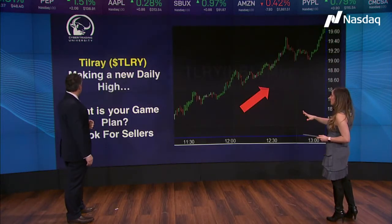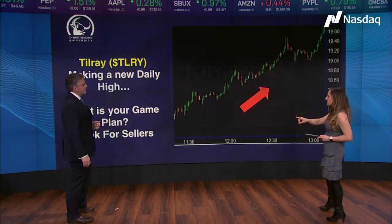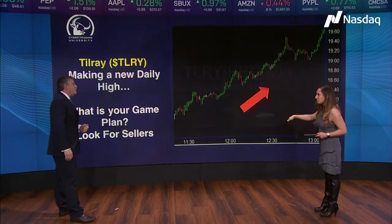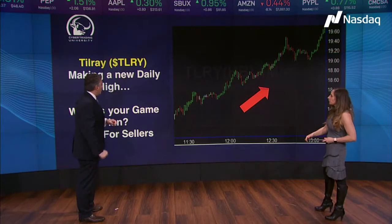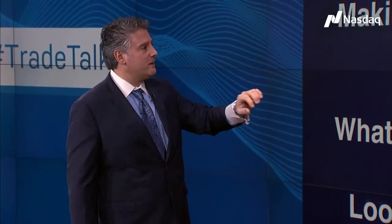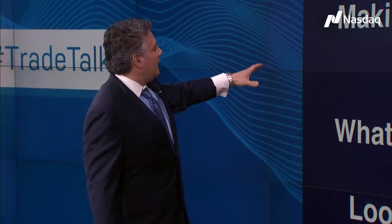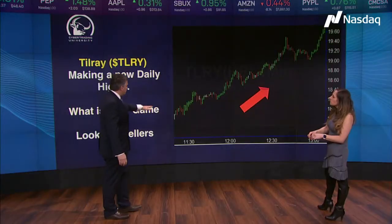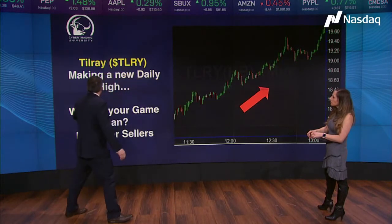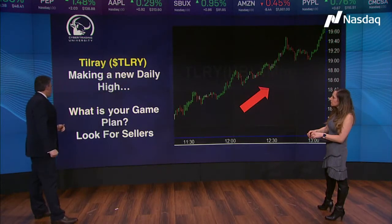Now let's move along to our next chart. It's Tilray. Different sector, but the same premise applies: when do you look to sell after you've established your bottom? So here we're looking at TLRY — a very popular stock. This stock was actually a $300 stock last year. It's been on a big move the last two days. The stock is trending up — a nice little trend from $17 to $19.60. What is your game plan? You've got to look for sellers, because it's a nice profit from $17.60 to $19.60. But how much higher could it go? You want to have that game plan.